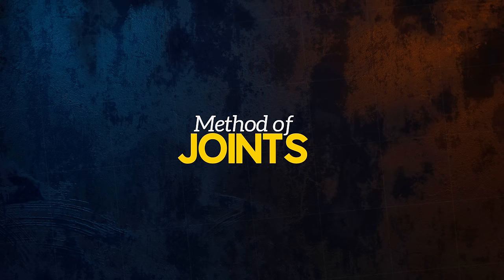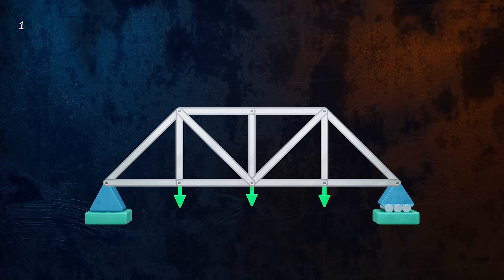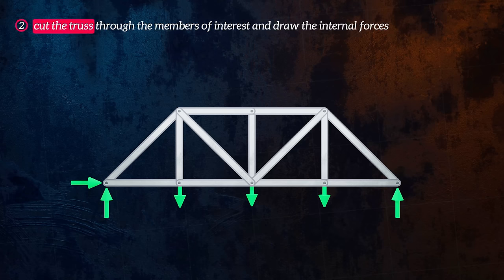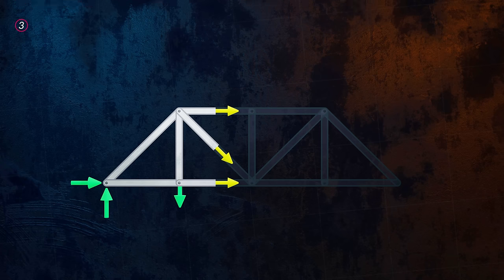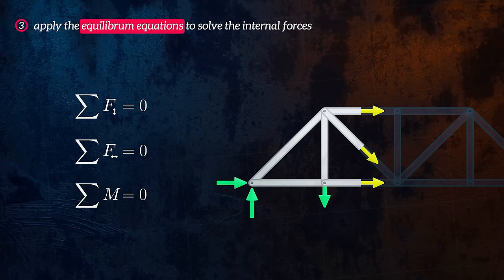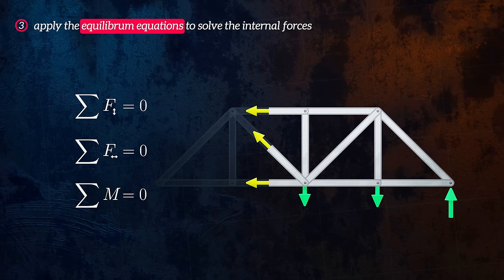We've covered the method of joints. Let's look at the other method we can use to solve trusses, which is the method of sections. The first step is the same: draw the free body diagram and use the equilibrium equations to solve the reaction forces. Next, we make an imaginary cut through the members of interest in our truss, and we draw the internal forces in the cut members. The internal and external forces must be in equilibrium, and so we can apply the equilibrium equations to solve the internal forces. Remember that we only have three equilibrium equations, so if you cut through too many members, you will have too many unknowns. The method of sections is best used when you have a truss with a lot of members but are only interested in the loading in a few specific members.